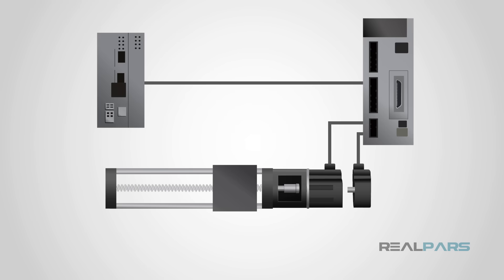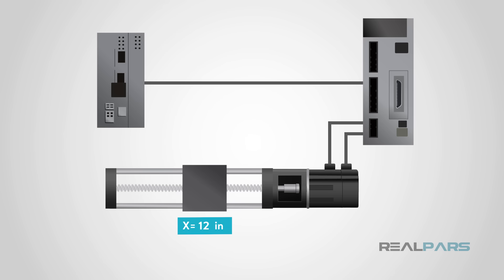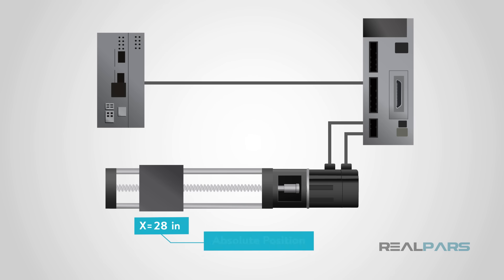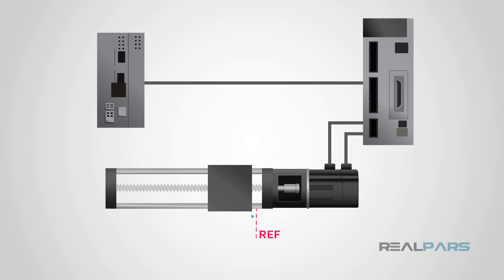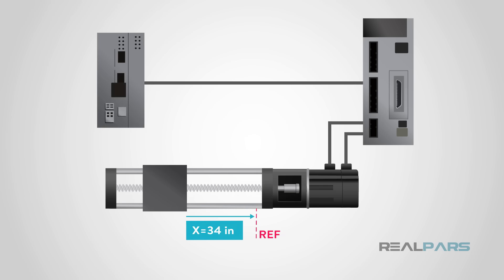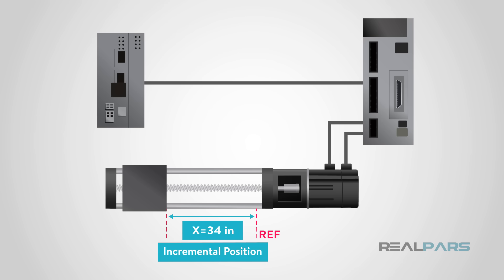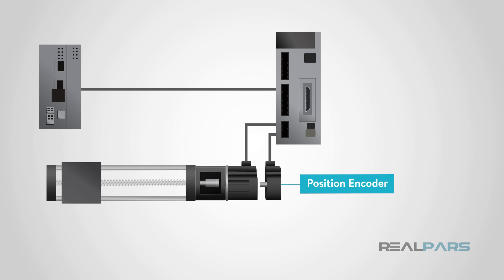The next encoder, which is a position encoder, is used to determine the mechanical position of an object — this mechanical position is an absolute position. They may also be used to determine a change in position between the encoder and object, which would be an incremental change. Position encoders are widely used in the industrial arena for sensing the position of tooling and multi-axis positioning. The position encoder can also be absolute or incremental.